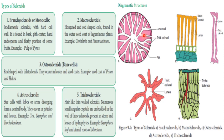Types of sclerids: Number one is brachysclerids (stone cells) — isodiametric, oval in shape, with living hard cell walls, found in bark, pith, cortex, endosperm, and fleshy pulp of some fruits like pear (Pyrus). Number two is macrosclerids — elongated, rod-shaped sclerids found in the outer seed coat of leguminous plants like Crotalaria and Pisum (pea seeds).